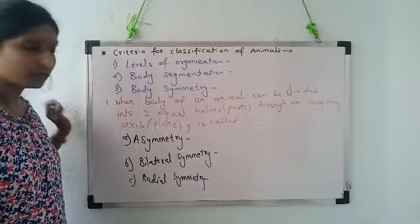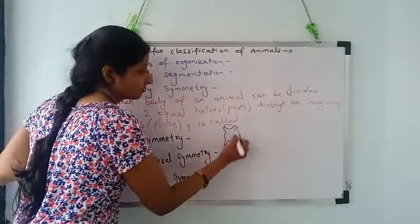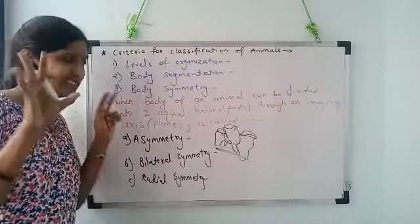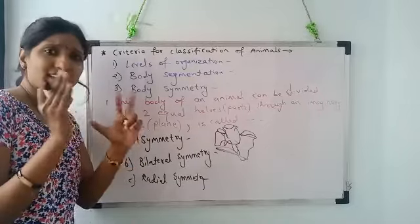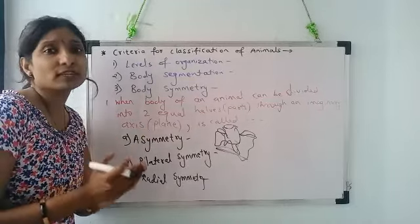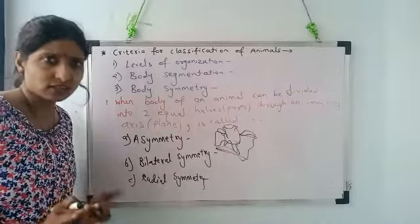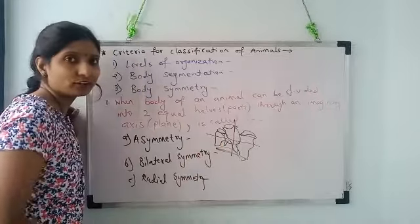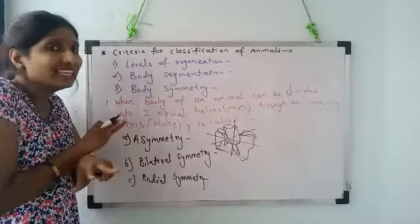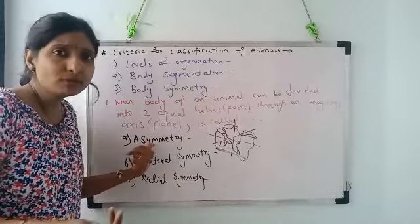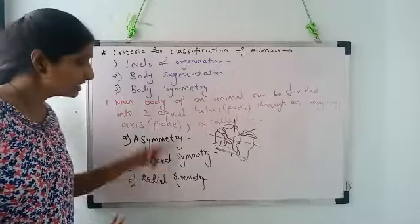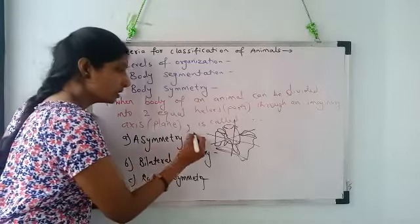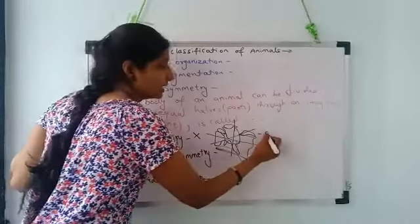Let me give you an example. Suppose there is an animal called sponge. In textbook you will get a better picture of this. Sponge is a cellular grade organism, just a mass of cells, no tissues, no organs, nothing. Now if you cut this vertically along the y-axis, or horizontally along the x-axis, or slanting along the z-axis, in any plane, this animal body cannot be divided into two equal halves. We do not get two equal halves in any plane.